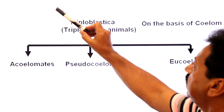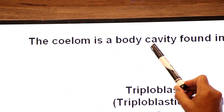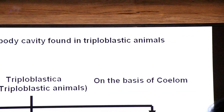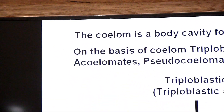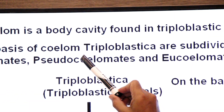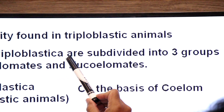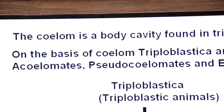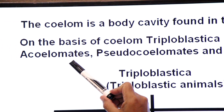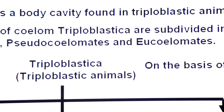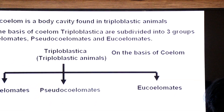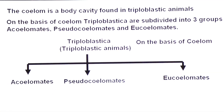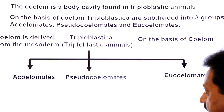What is coelom? The coelom is a body cavity found in Triploblastic Animals. On the basis of coelom, Triploblastica are subdivided into three groups: Acoelomates, Pseudocoelomates, and Eucoelomates. Remember that the coelom body cavity is derived from mesoderm.